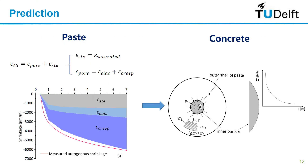At paste level we can divide the shrinkage into several parts: the part induced by the steric hydration force, the elastic part, and the creep part. When we want to predict the shrinkage of concrete we need to consider the restraining effect of the aggregates, which are very stiff, which do not shrink, but can restrain the shrinkage of the surrounding paste.